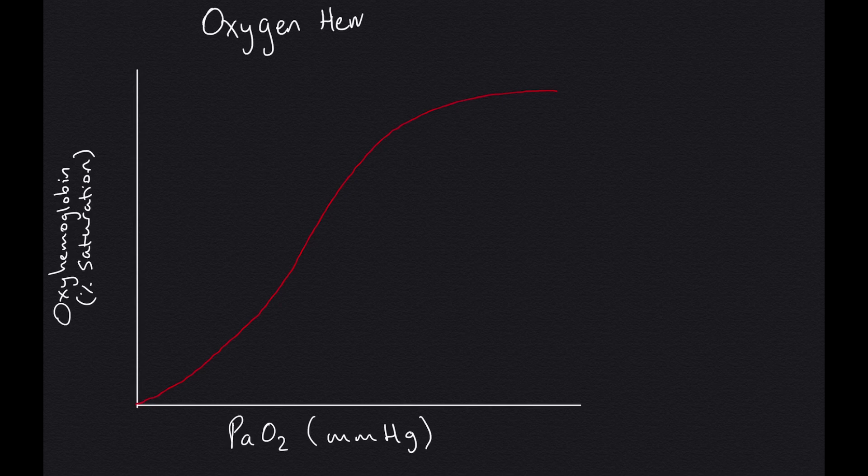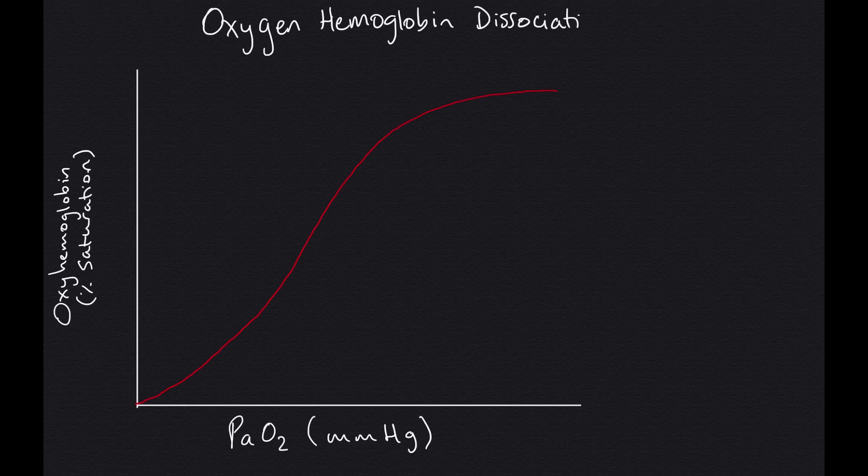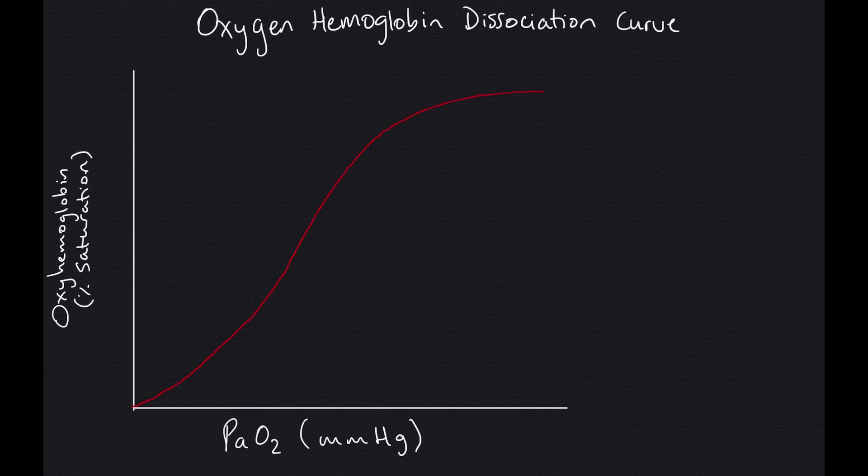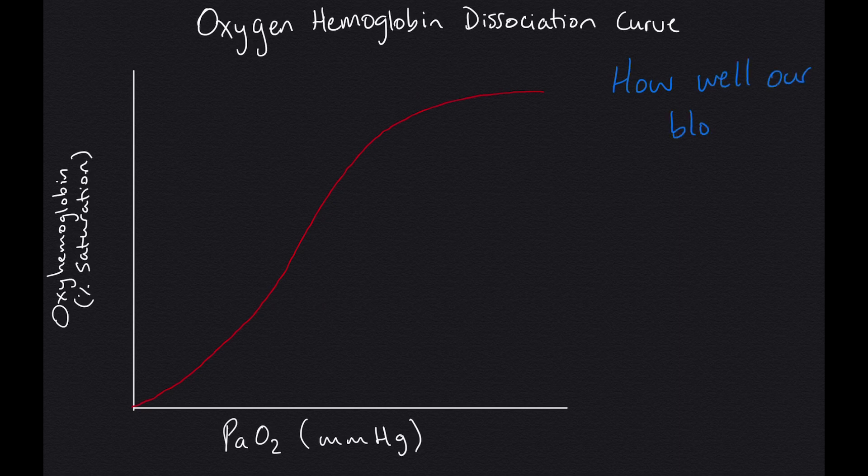Hey everyone, in this video we're discussing the oxygen hemoglobin dissociation curve, also called the oxyhemoglobin curve or OHDC. This curve shows us how our blood carries and releases oxygen molecules.